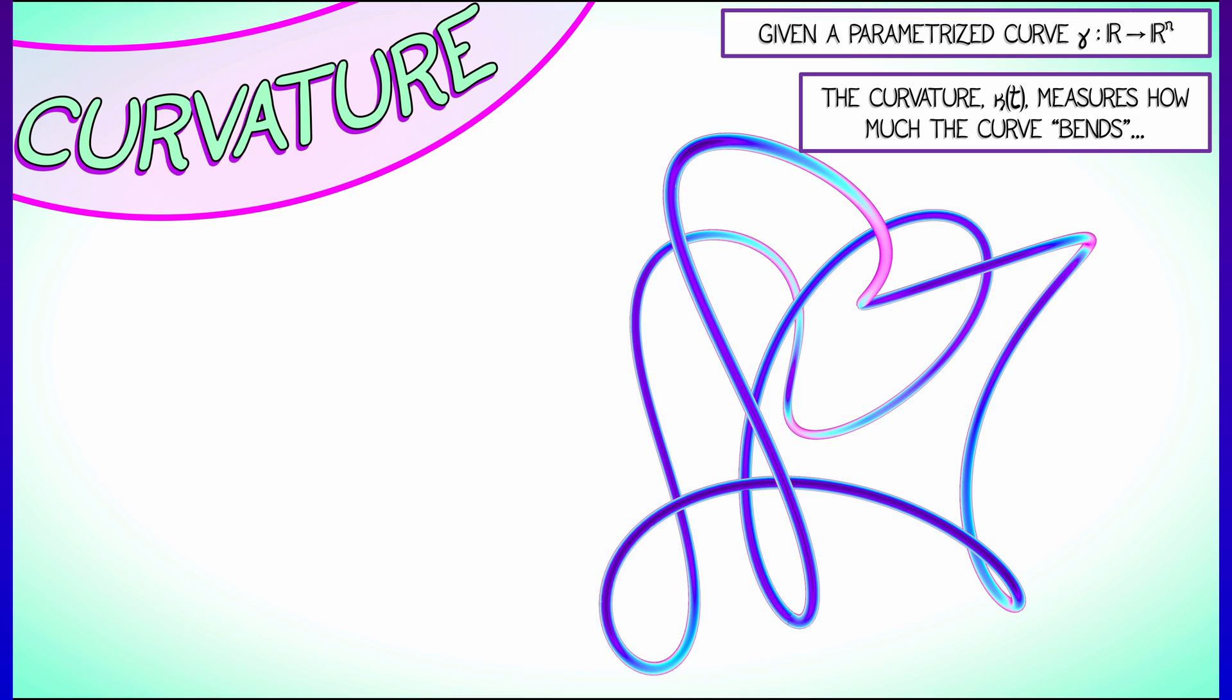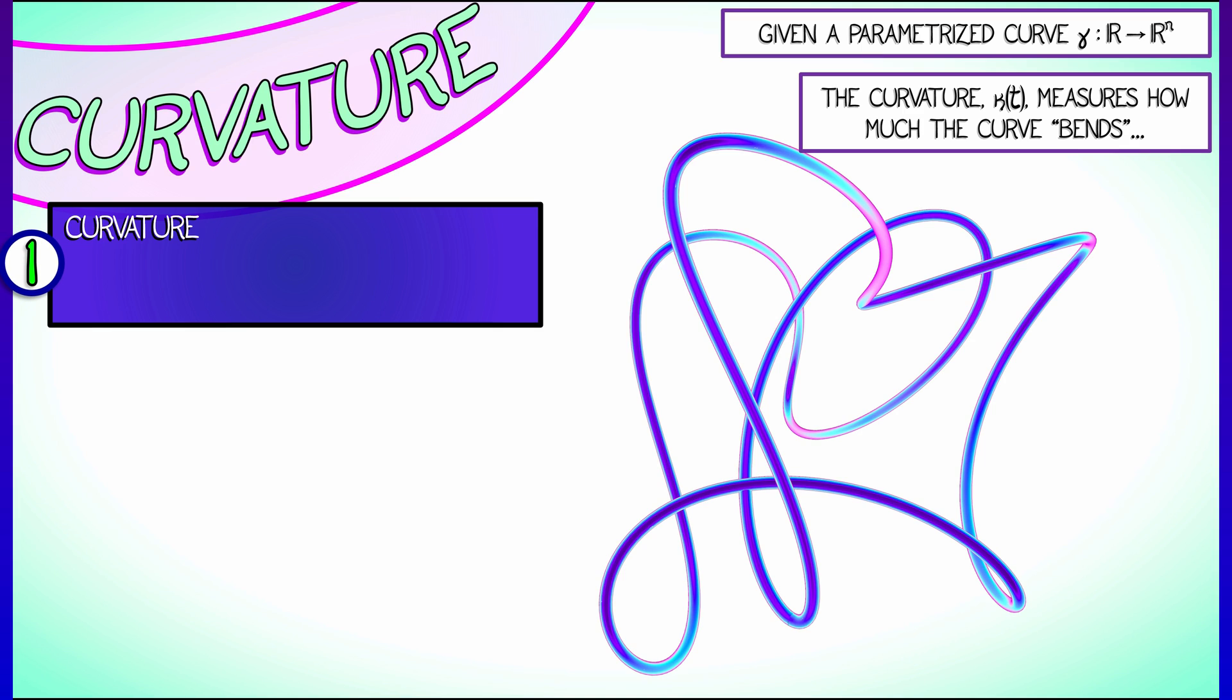So given a curve gamma in R^n, the curvature is denoted kappa of t, and it measures how much the curve bends.